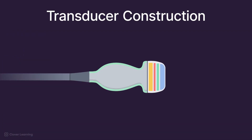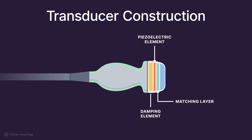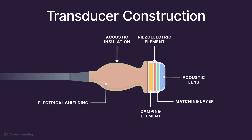In summary, the components of an ultrasound transducer are the piezoelectric crystal, matching layer, damping element, acoustic lens, acoustic insulation, electrical shielding, and protective housing.